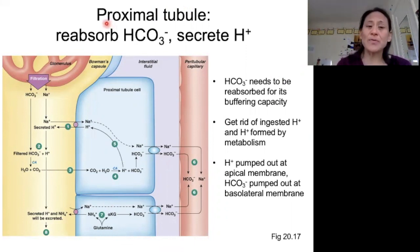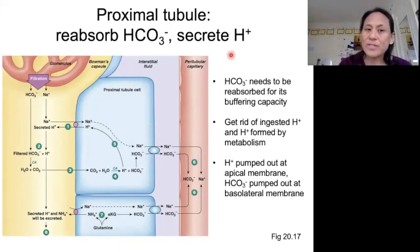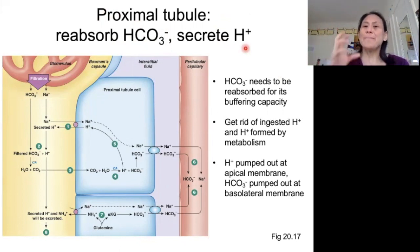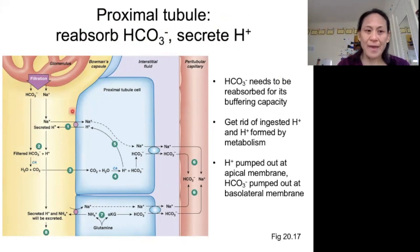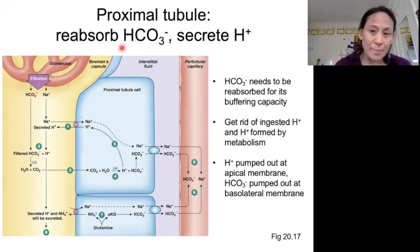In the proximal tubule, what we're going to be doing is reabsorbing bicarbonate, and coupled with that, we are going to secrete hydrogen ion. We have a whole bunch of bicarbonate in our plasma acting as a buffer for pH changes. Because that bicarbonate is in our plasma, it is going to end up filtering into the tubule of our nephrons. Since we want that bicarbonate, we're going to need to reabsorb it back into our bloodstream so that we can still have it available to act as a buffer for our acid-base changes.